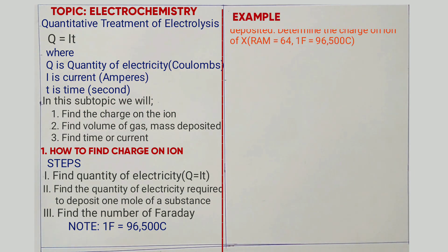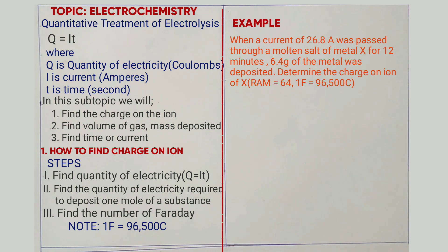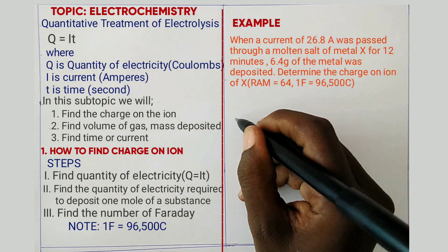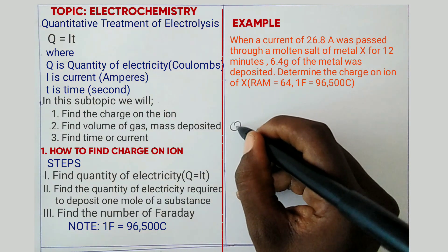For example: when a current of 26.8 A was passed through a molten salt of metal X, 6.4 grams were deposited at the cathode. Calculate the charge on the metal X. The solution: step one is to find the value of Q, so Q is equal to IT.